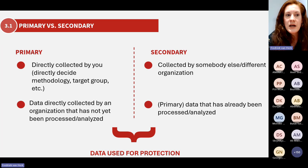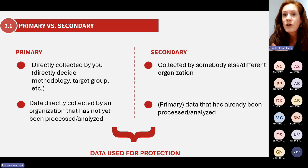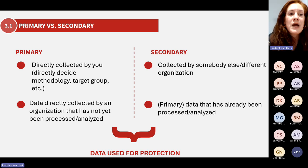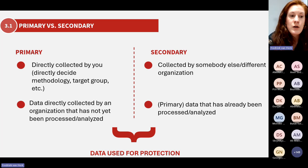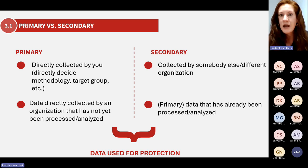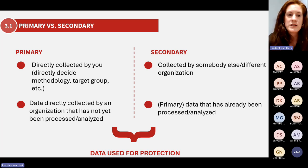Primary data is data collected usually by yourself and/or your organization, where you have had direct influence over the methodology, who has been targeted, etc. So it could be, for example, protection monitoring — if you're administering that yourself, you know how many people are being interviewed, what the questions are, how it's been set up. You get all this raw data yourself. It could also refer to a dataset that has not yet been analyzed — so let's say you have access to a database that hasn't been processed; you could say you have access to primary data, even though you didn't collect it.